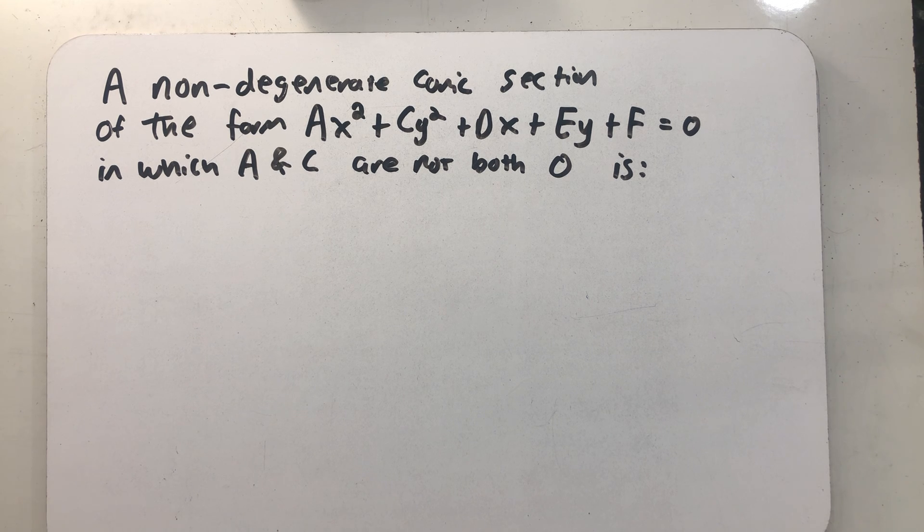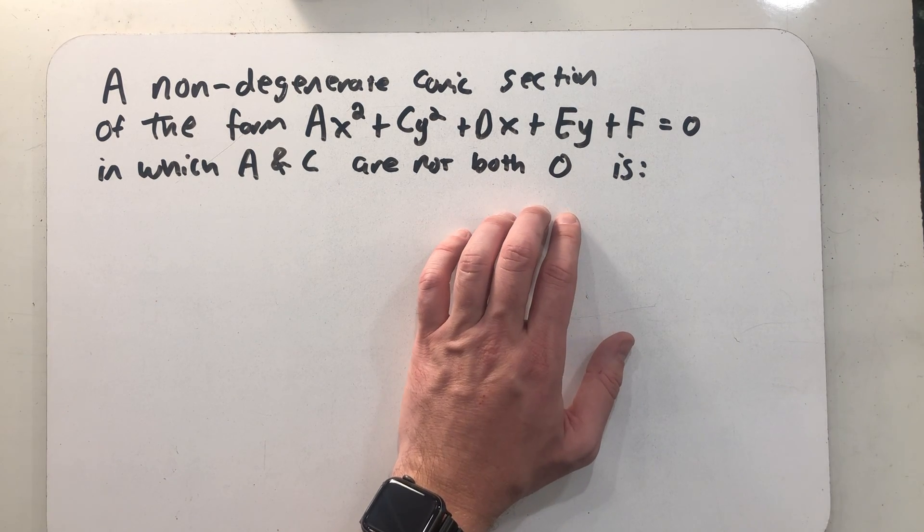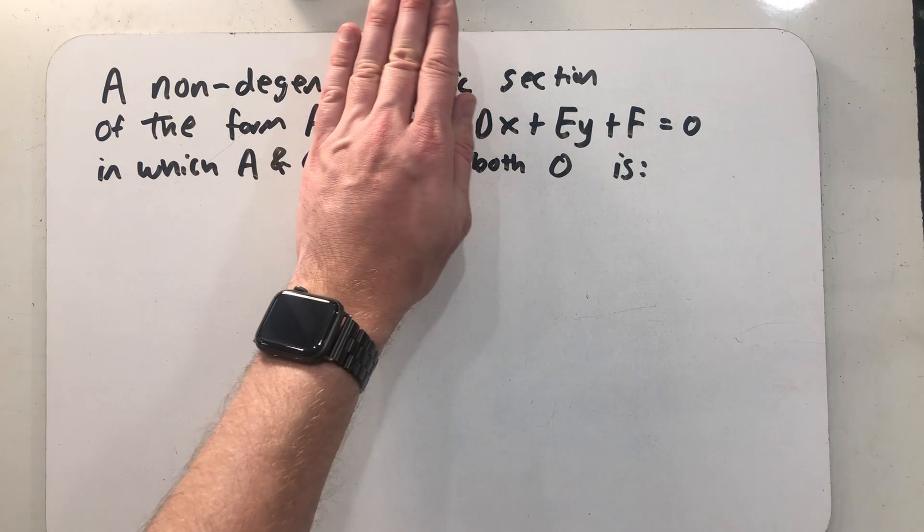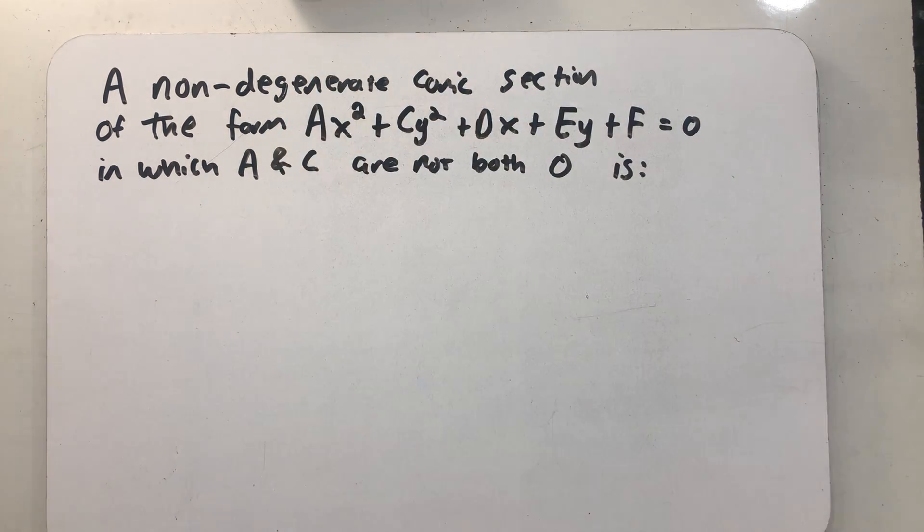But let's just say that someone came along and gave us a non-degenerate conic section in its general form: ax squared plus cy squared plus dx plus ey plus f equals zero, where a and c are not simultaneously zero. Well, the reason for that is if a and c are both zero, then we just get a line, which is one of our degenerate conic sections, which we're told we don't have.